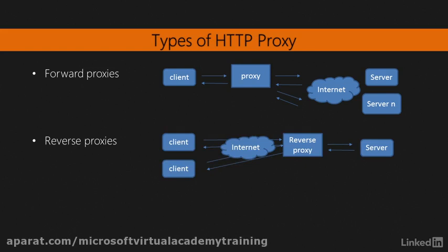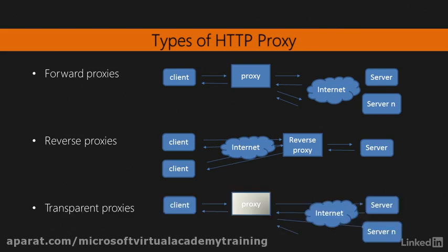Reverse proxies — these are proxies used by companies in order to hide behind network architecture, and mainly to distribute load between real servers. The user thinks they are connecting to a real server, but they are connecting to a proxy that will handle the request. Transparent proxies intercept normal communications at the network layer without requiring any configuration on the client's side. Usually, clients do not know they are using a transparent proxy, and transparent proxies usually do not modify requests and responses.